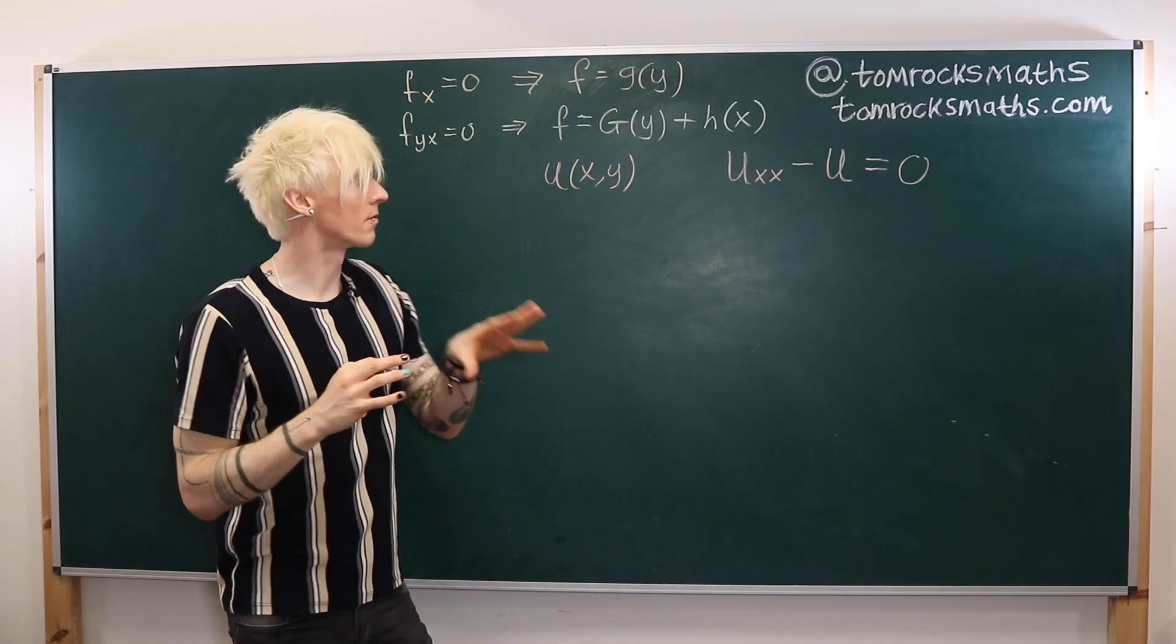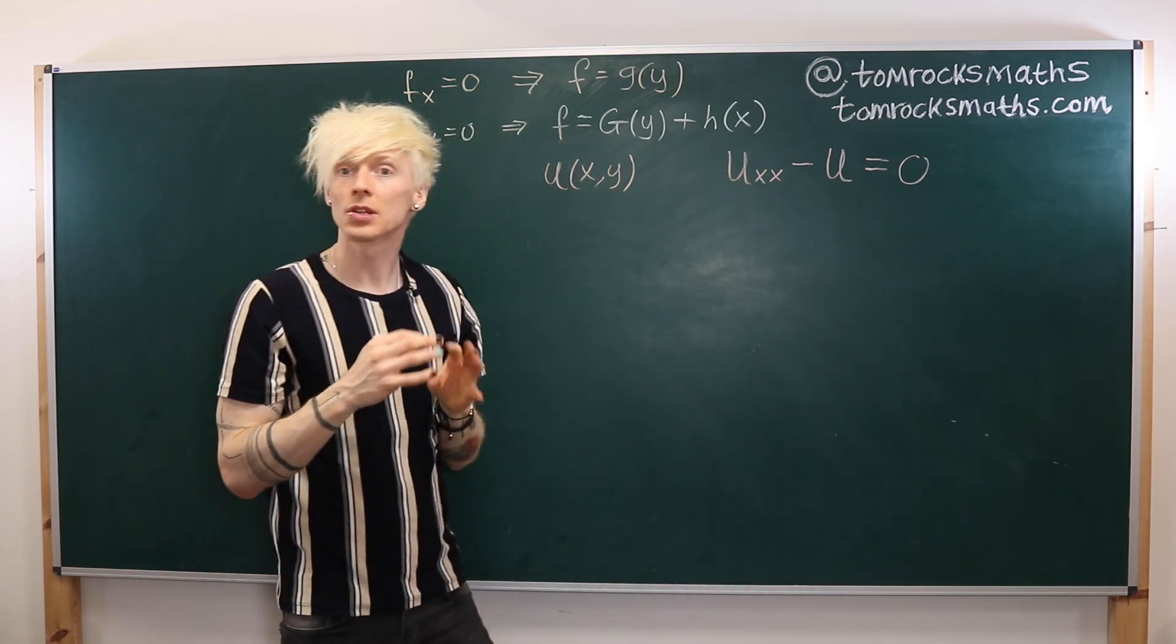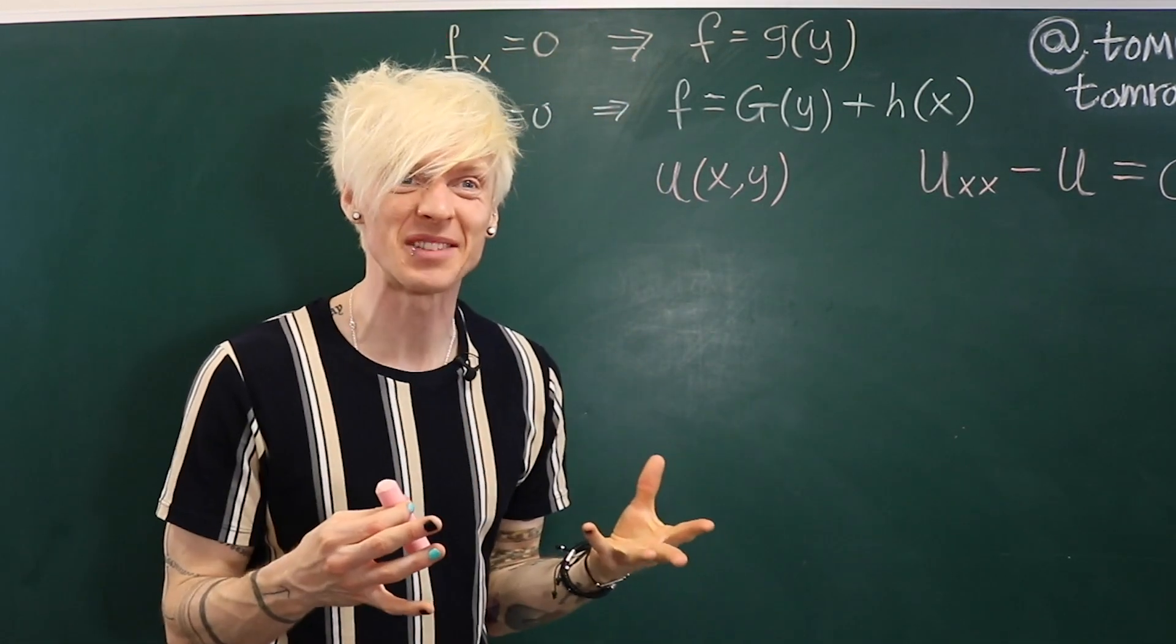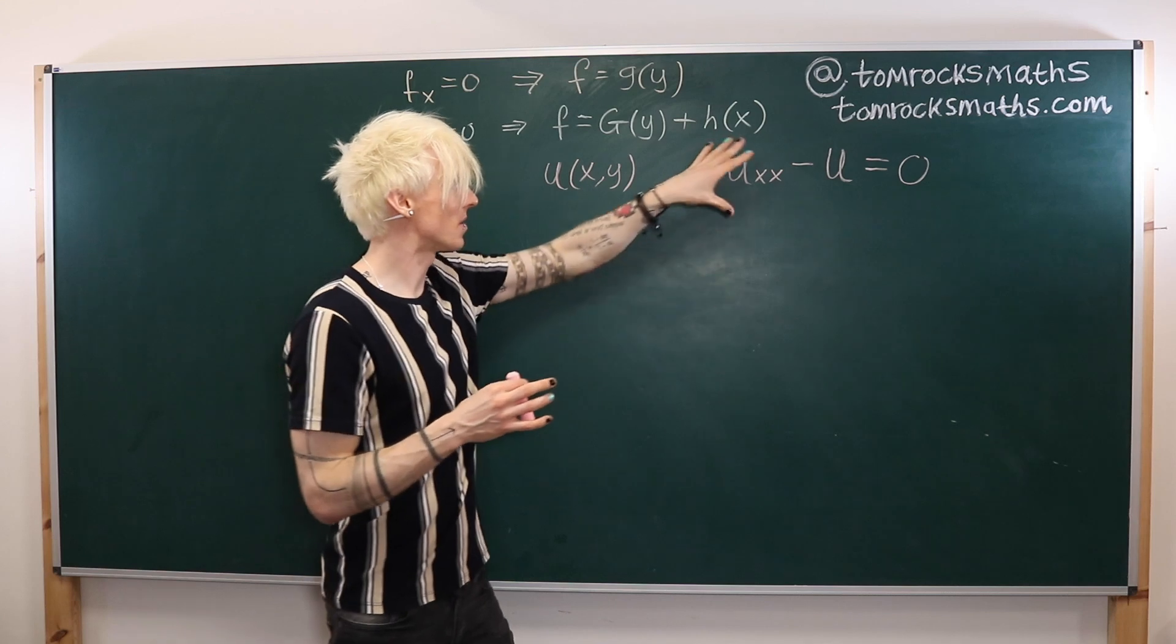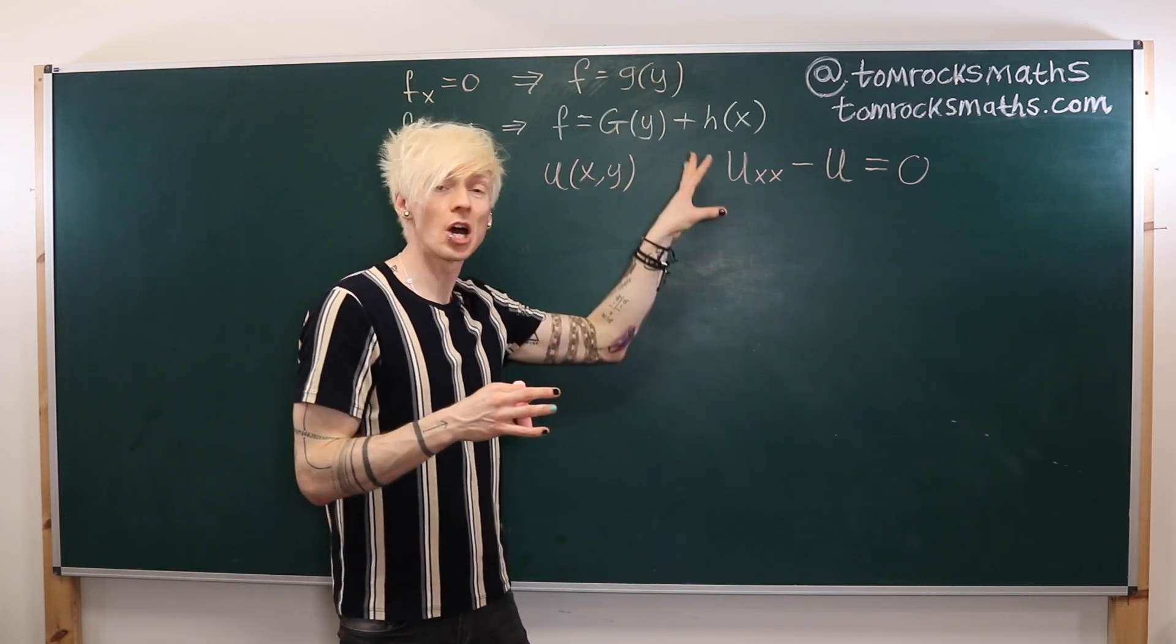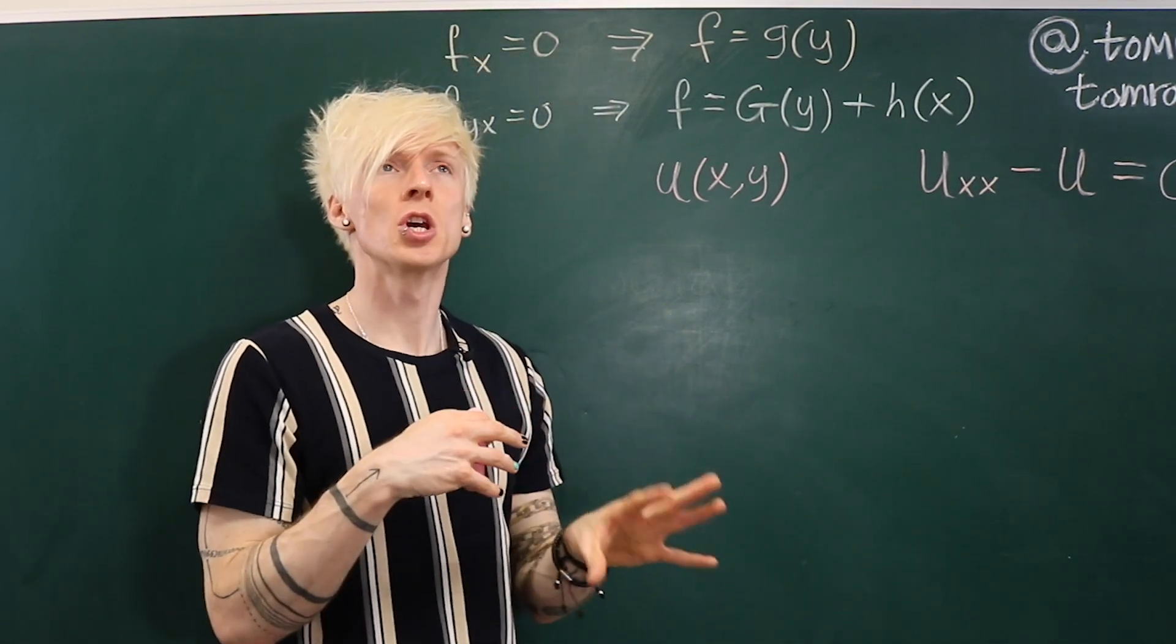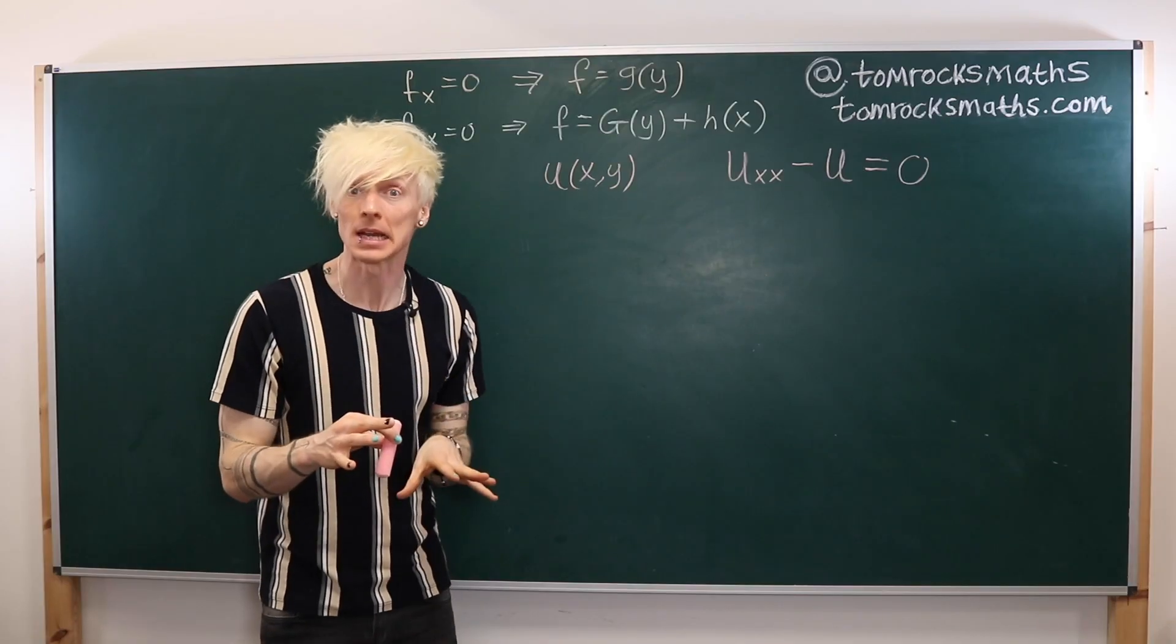So now we have two terms involving our solution u. We've got a second order x derivative and the actual solution or function u itself. Looking at this equation we can see it's going to be a little trickier because our previous approach of just integrating both sides of the equation unfortunately isn't going to work. Because if I were to integrate with respect to x this term would be fine but then I'd be left with the integral of the unknown function that we're trying to solve for. So we're going to have to take a slightly different approach. If we think back to how we dealt with our first equation we used our knowledge of ordinary differential equations to help us to come up with a sensible way of trying to solve the PDE.